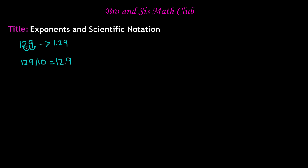So when we're writing in scientific notation, we just want to rewrite the number. We got 1.29 by moving the decimal point twice from right to left. So we're going to write 1.29 times — because multiplication is the reverse of division — times 10 to the power of 2, because we moved the decimal point twice from right to left. So the scientific notation for 129 is 1.29 times 10 to the power of 2.